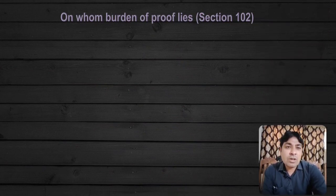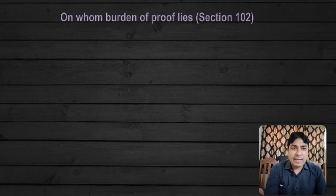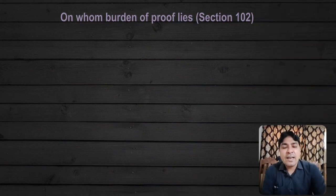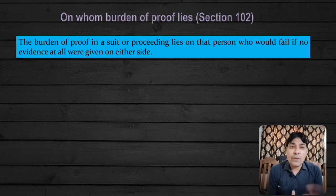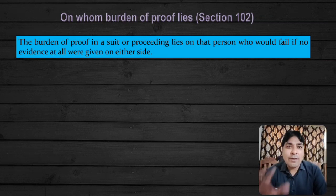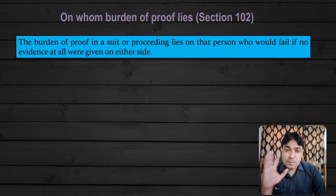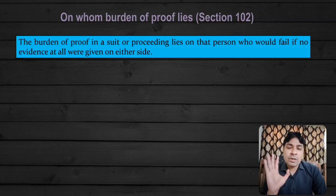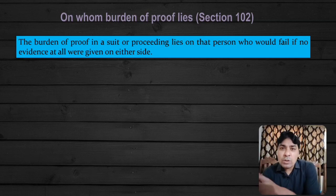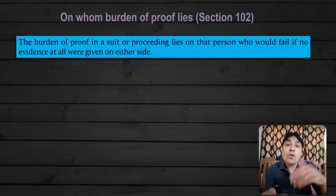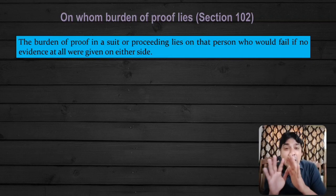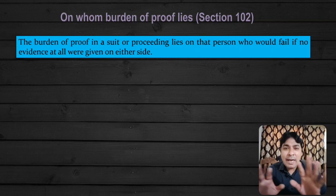Now Section 102 — on whom Burden of Proof lies. The burden of proof in a suit or proceeding lies on that person who would fail if no evidence at all were given on either side. That is the provision of Section 102. The burden of proof in any suit or in any criminal proceeding lies on such person who would fail if no evidence is given by either side.